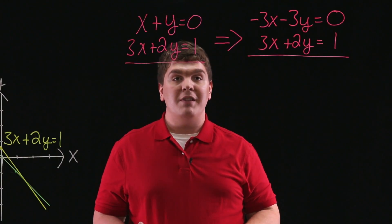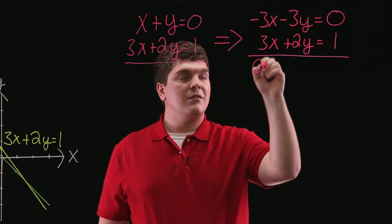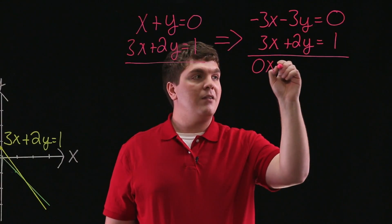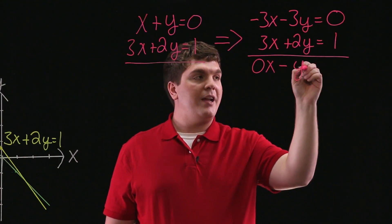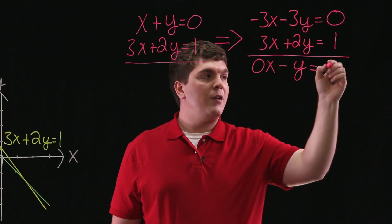Next, we can add both of these equations. So we have negative 3x plus 3x is 0x. And we have minus 3y plus 2y is negative y. And this is equal to 0 plus 1, which is 1.